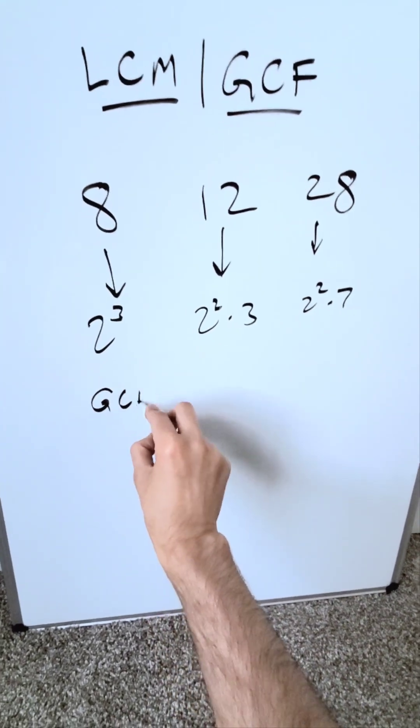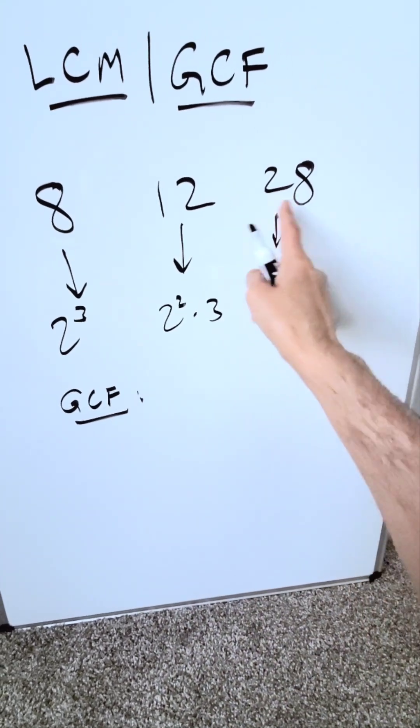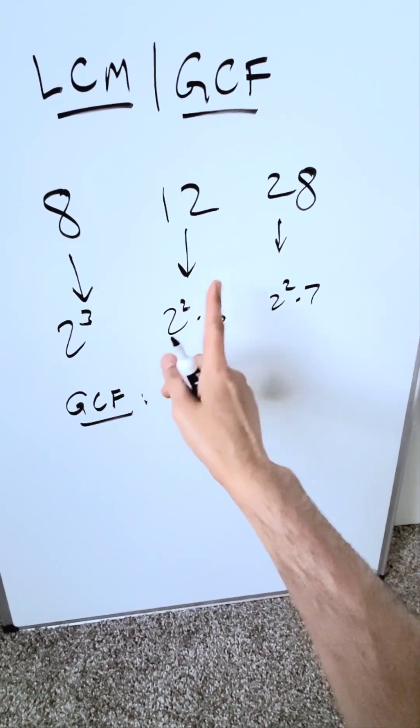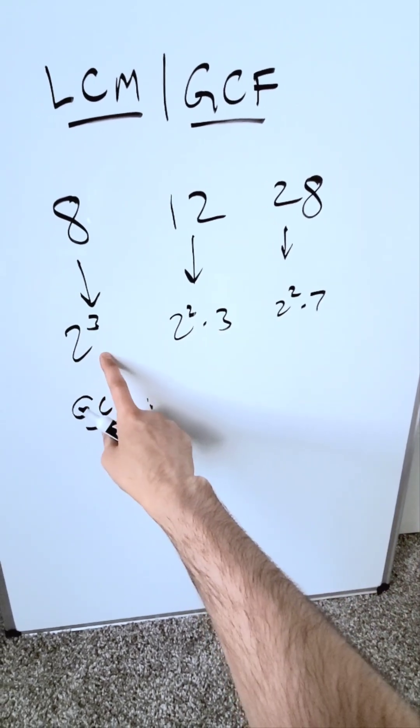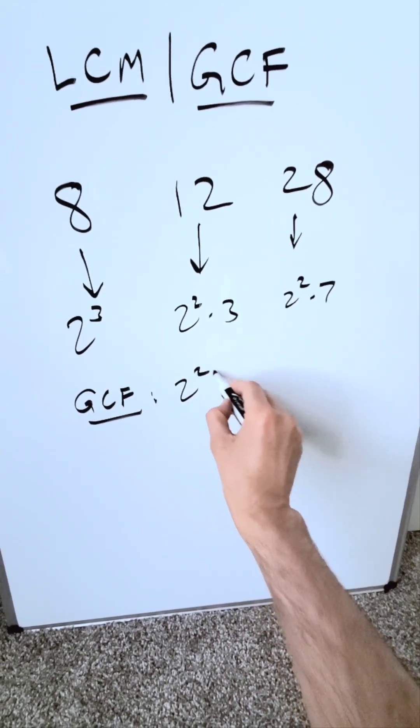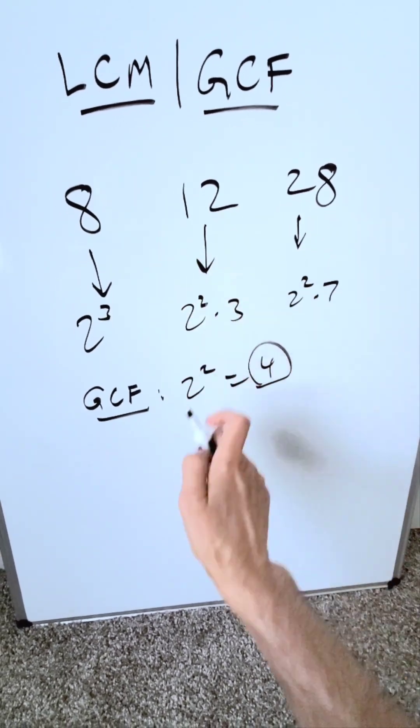Now let's look at greatest common factor. What is that number which will go into these? The largest number going into those three numbers. I have 2 squared, 2 squared, and 2 squared here, and it will be exactly that: 2 squared, which is 4. It is the greatest common factor that goes into all of these.